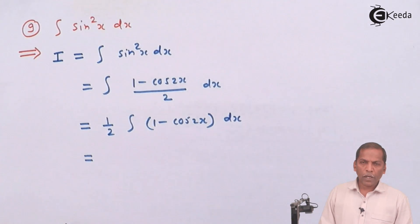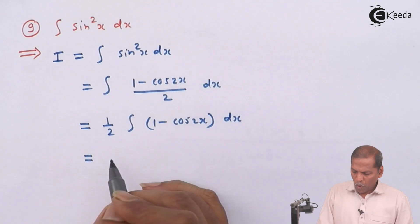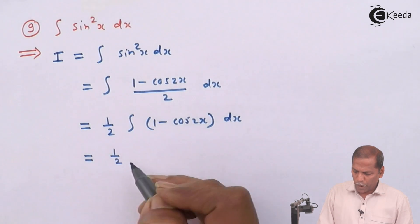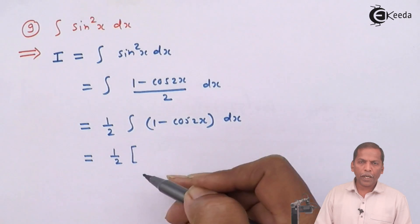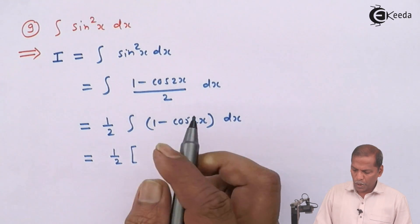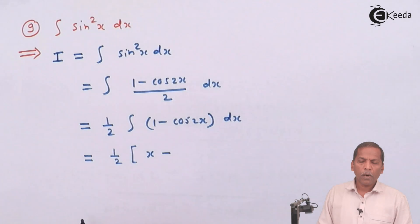The next step will be 1 upon 2 in bracket. Now integration of 1 is x minus integration of cos 2x is sine 2x upon coefficient of x, that is 2.